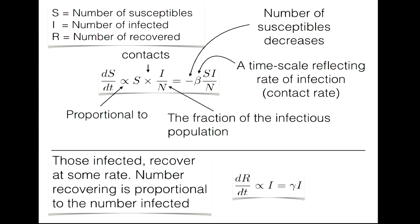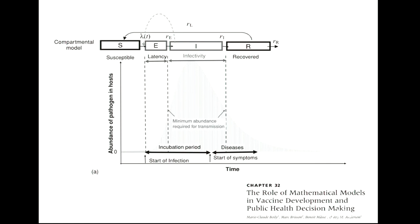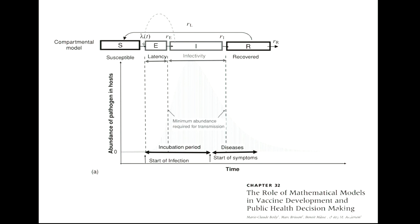Looking at the pathogen load inside the host: at the start of infection there is no pathogen; it rises across an incubation period through a latent period where the person is in the exposed (E) compartment—not yet infecting others or showing symptoms. This is followed by the infective period, where pathogen peaks and then declines. Eventually the load decreases to zero, placing the individual in the recovered compartment. There is a minimum abundance of pathogen required before transmission between persons can begin.